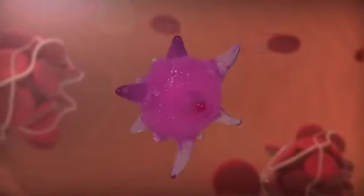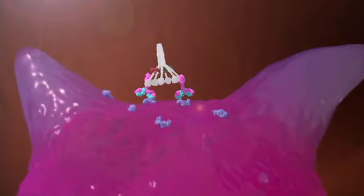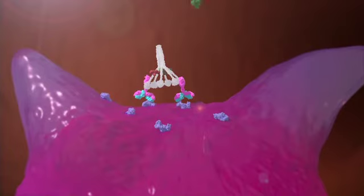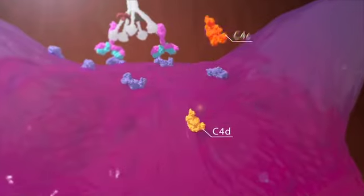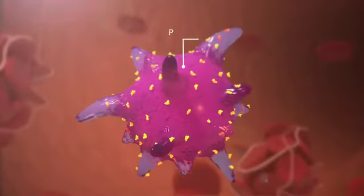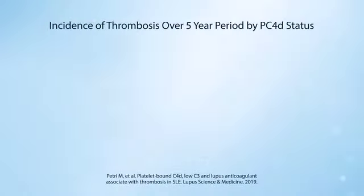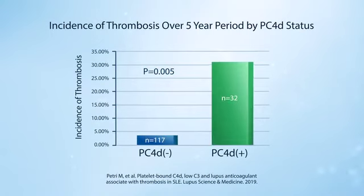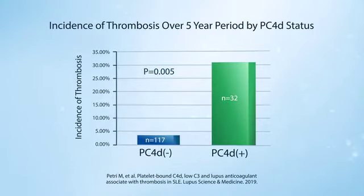The most recent CB-CAPs discovery explores how complement activation in the artery or veins may signal risk of thrombosis. Here we can see C4D being deposited on platelets, creating PC4D. Elevated levels of PC4D have been shown to have a significant association with a history of thrombosis in SLE.